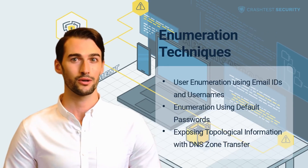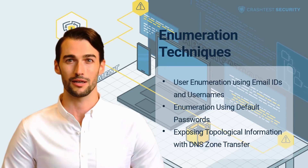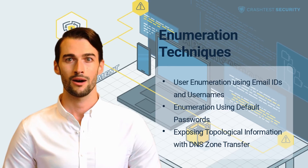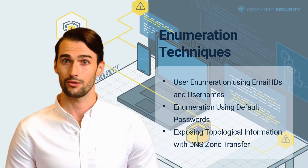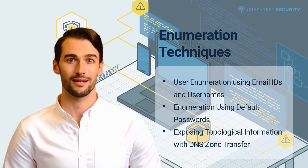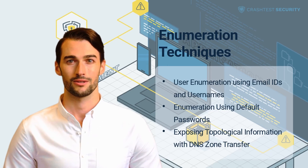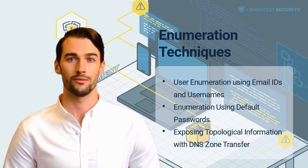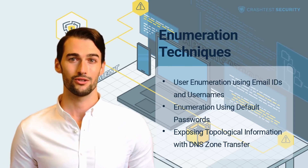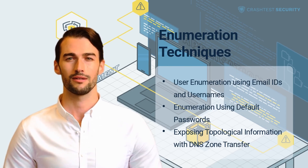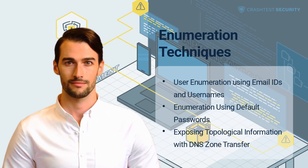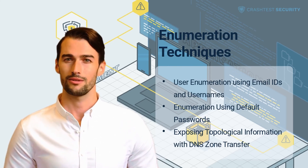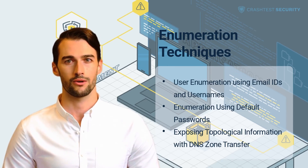Some ways for adversaries to orchestrate enumeration attacks include user enumeration using email IDs and usernames. Email IDs customarily contain two parts: username and domain name. The character preceding the at symbol refers to the username; attackers can use this to guess valid users based on a brute force attack. Attackers presume valid users of an application based on how the server responds to submitted credentials. If the server responds 'user does not exist,' it implies a problem with the username. When the server responds 'wrong password,' the attacker infers that the username exists in the directory. The output of this user enumeration attack is used to gain valid username lists.